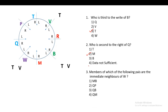The third question: which pair are the immediate neighbors of W? Locate W — its immediate neighbors are Q and M. So the correct option is the fourth one: Q and M.